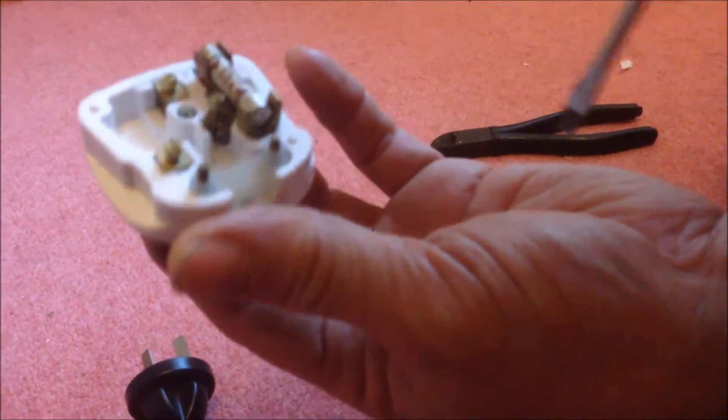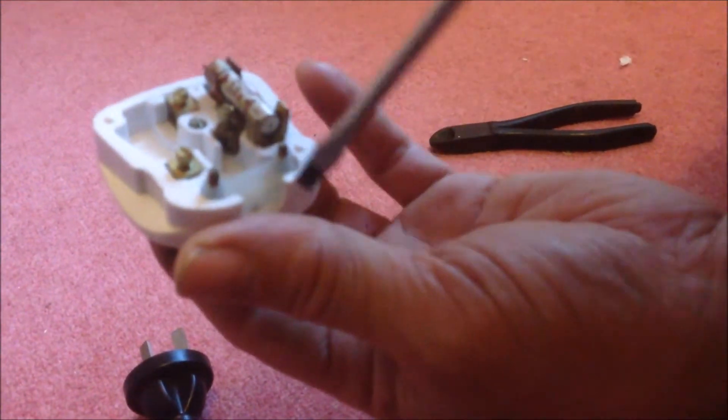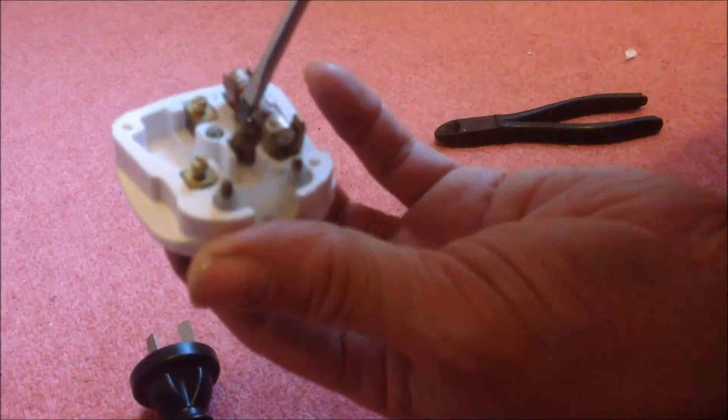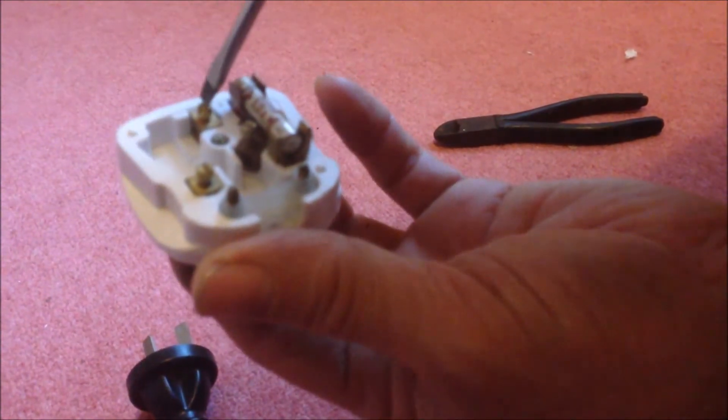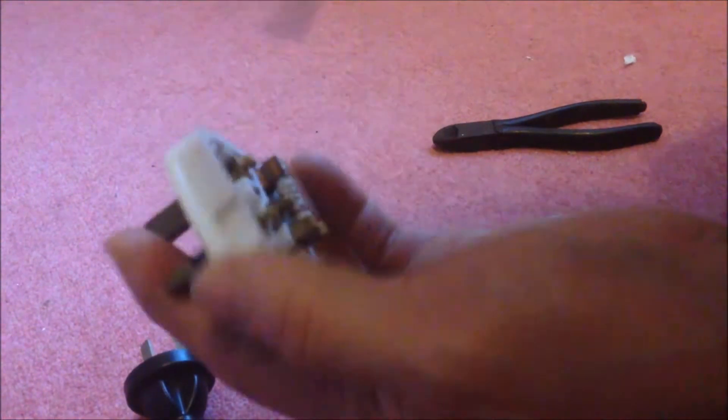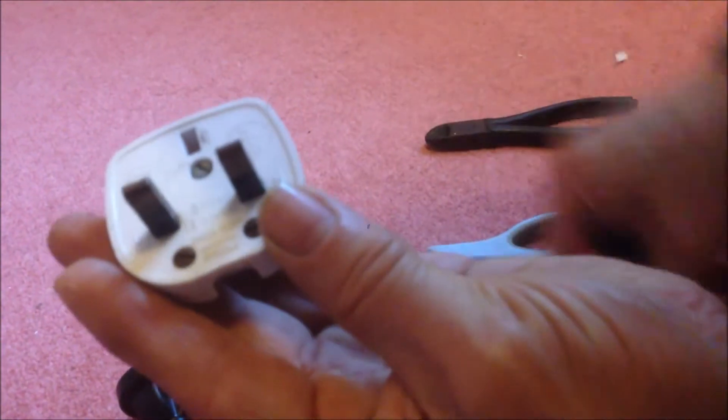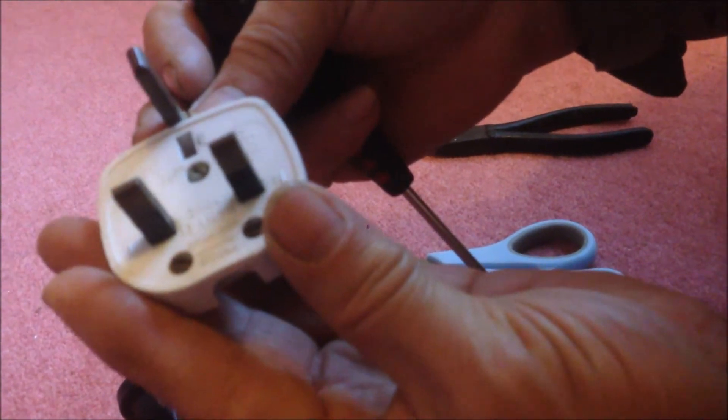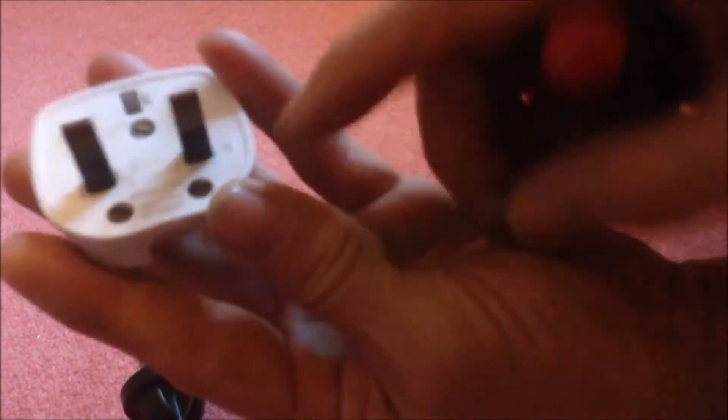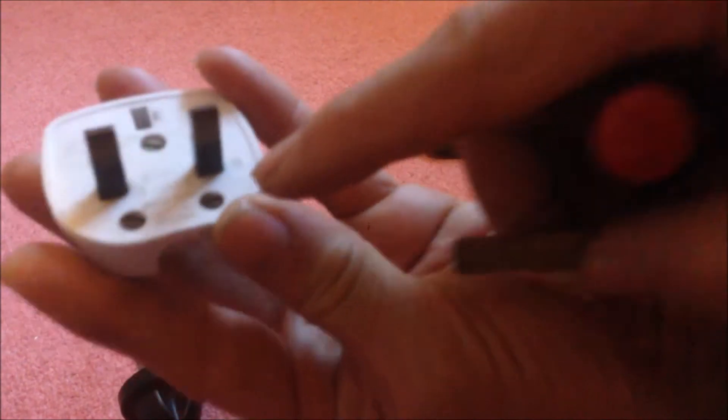So the live has to go to the fused connector and the neutral to here and the earth to the top. If you see this side, we have this biggest one at the top which is the earth, and then we have here you can see N and L.